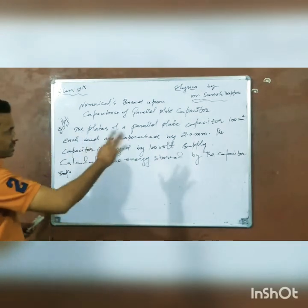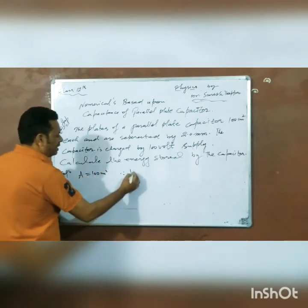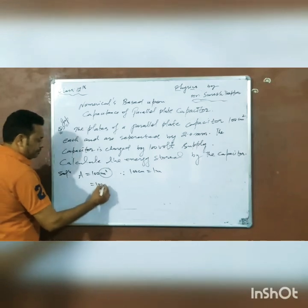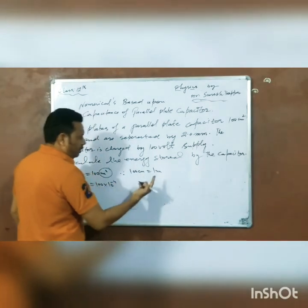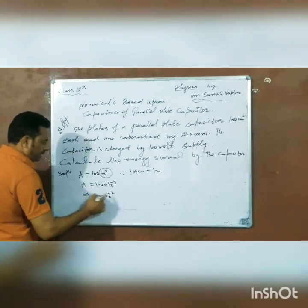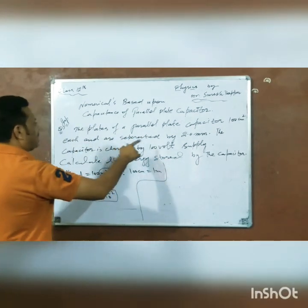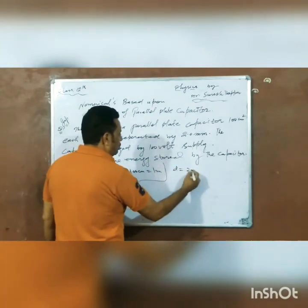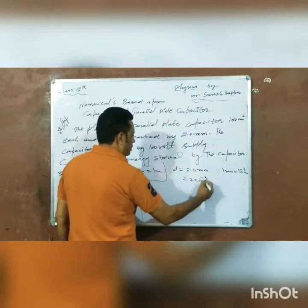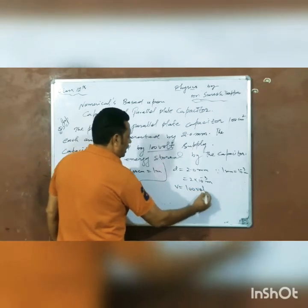So we have a parallel plate capacitor. Each plate area is 100 square centimeter. This equals 1 meter square, which is 10 to the power minus 2. The separation between plates is 10 to the power minus 3 meter. The potential V is 100 volt.